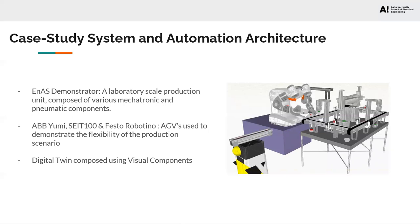In the case study, we use the INAH demonstrator, a laboratory-scale production unit composed of various mechatronic and pneumatic components. Mechatronic components such as conveyors are used to transport workpieces from one position to another. Pneumatic components such as grippers and jacks are used to pick up and place various colored workpieces on the conveyor. To demonstrate flexibility, various AGVs such as the Seat 100 and the Festo Robotino are considered. On the Seat 100, we have mounted the ABB dual-handed robot to showcase flexible operations in combining various machines. A digital twin of all these machines has been developed on the Visual Components software and can be seen on the screen.